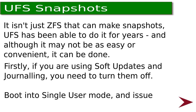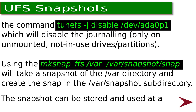You need to boot into Single User Mode and issue the command shown on screen, which will disable the journaling, but only on unmounted, not-in-use drives and partitions. Using the make_snap_FFS command highlighted on screen, you can take a snapshot of the var directory and create a copy in the snapshot sub-directory. The snapshot can be stored and used at a later time.